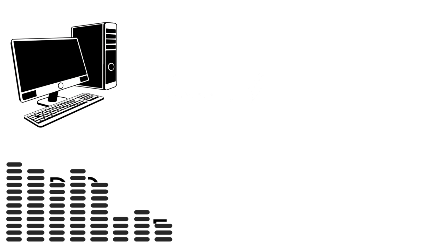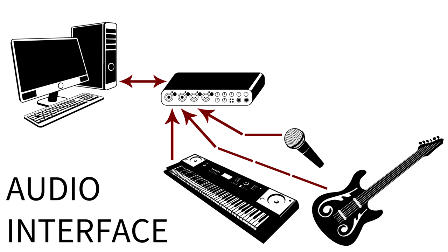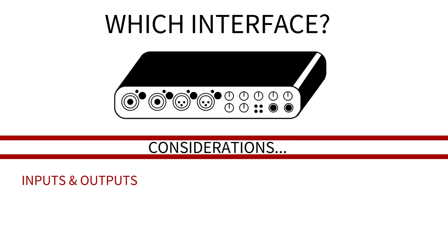The audio interface is a kind of professional-grade sound card. It'll have better sound and lots of crucial features for audio production that a regular computer sound card won't have. You'll want one with multiple inputs that allow you to connect microphones, keyboards, and direct-in guitars, as well as outputs for headphones and speakers. Interfaces are differentiated by the number of inputs and outputs they have.